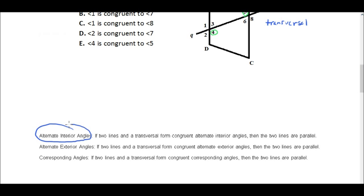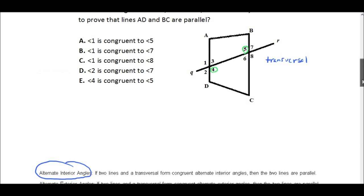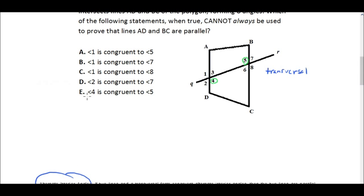Okay, so the alternate interior angle theorem says that if two lines and a transversal form congruent alternate interior angles, then the two lines are parallel. So if angle four is congruent to angle five, then these two lines would be parallel. So E is out.